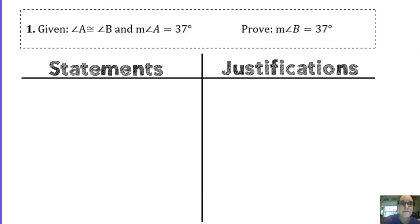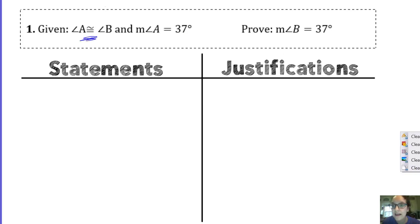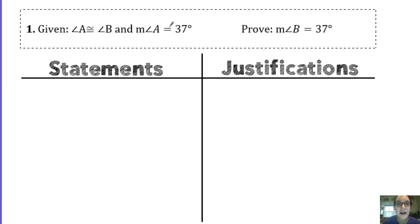Looking at the first example: given that angle A is congruent to angle B — notice that congruent symbol — and the measure of angle A is equal to 37 degrees. So I have a mix of symbols: congruent symbols and equal signs. At some point in my proof, I need to switch from the congruent symbol to an equal sign.